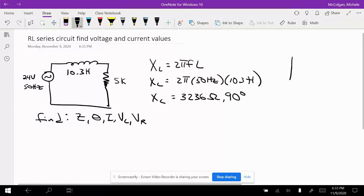So we've got our phasor. This is our R, this is our XL, and this is our Z, and this is our theta.